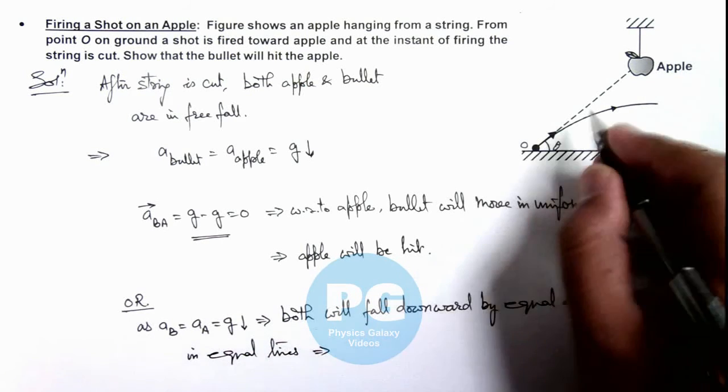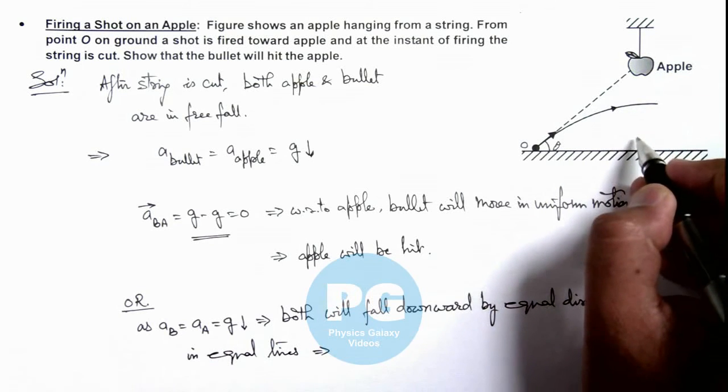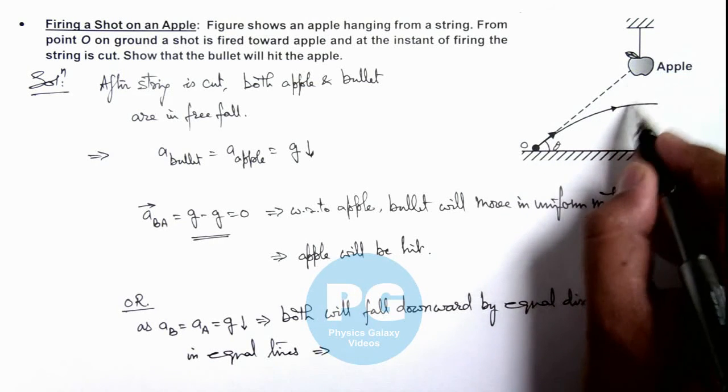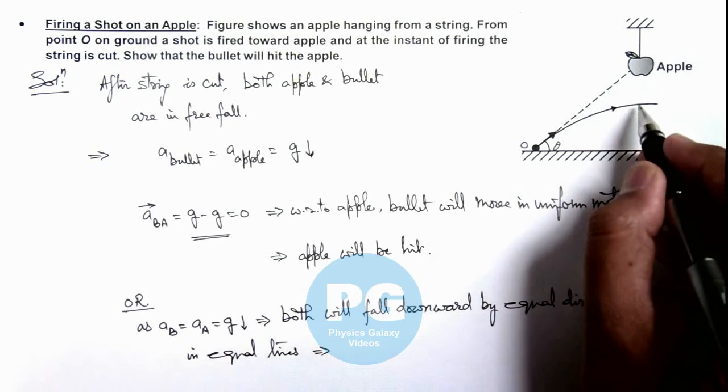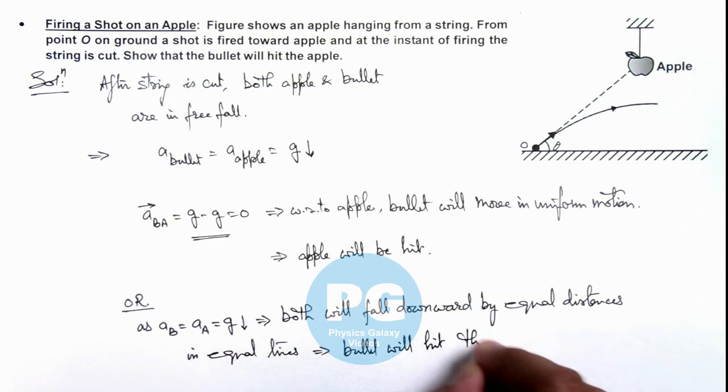This implies when the bullet will reach the horizontal position of apple, it has fallen by this distance. Apple will also fall by this distance. This implies bullet will hit the apple.